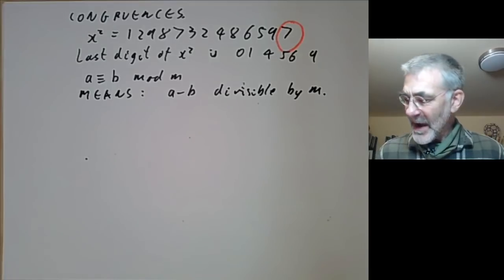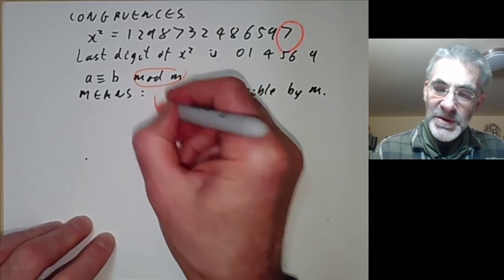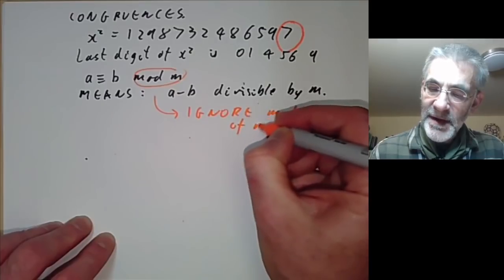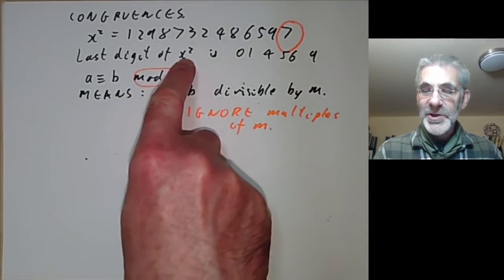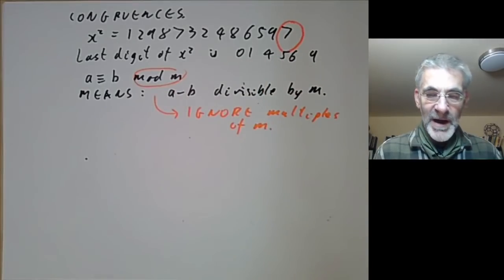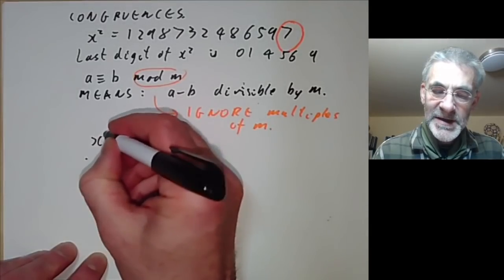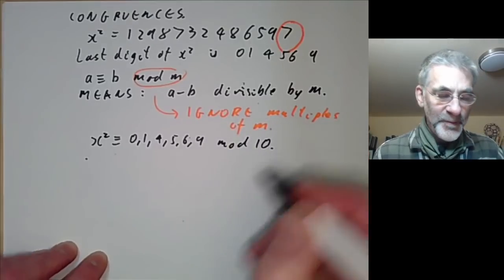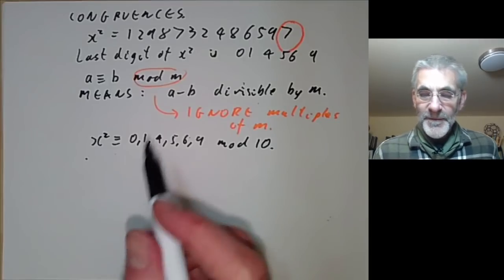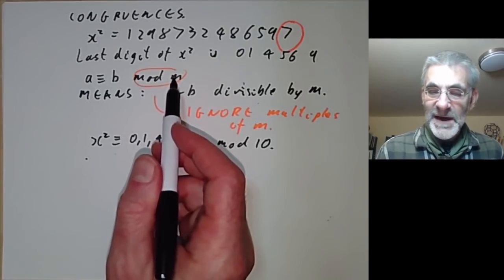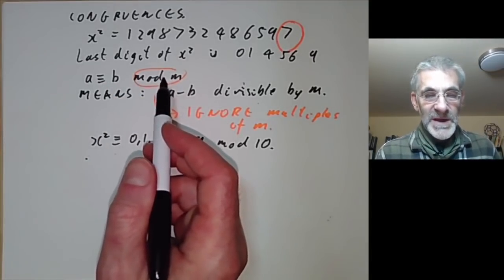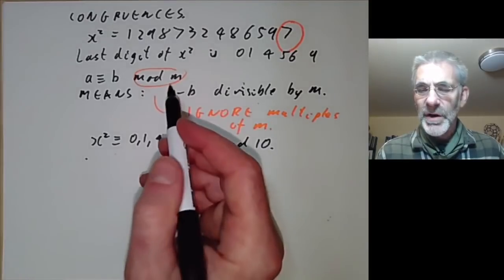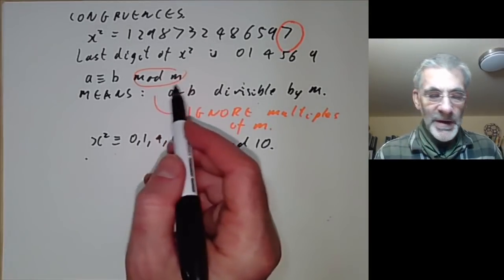Working modulo a number is a very powerful technique. The integers modulo m form what is called a ring — the usual rules of high school arithmetic mostly work with one or two exceptions. So x squared is congruent to 0, 1, 4, 5, 6, or 9 modulo 10, and working modulo a given number is really quite useful for number theory.